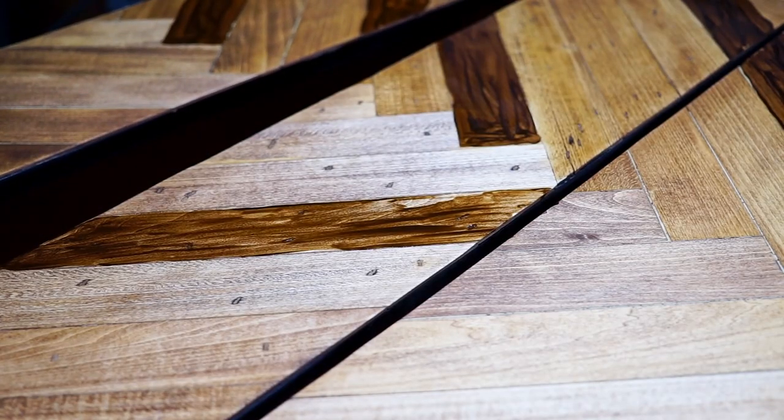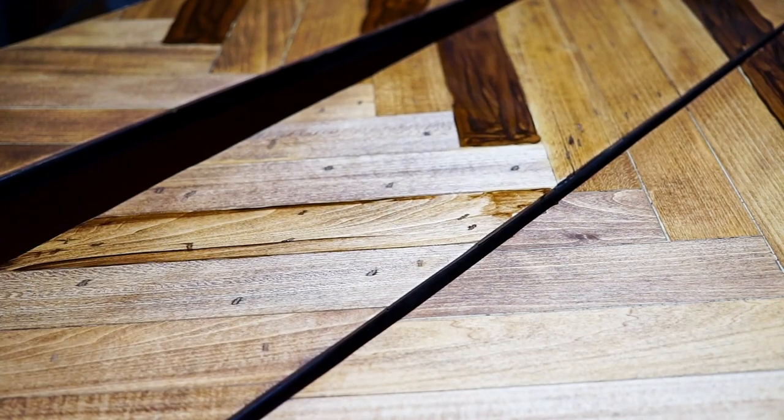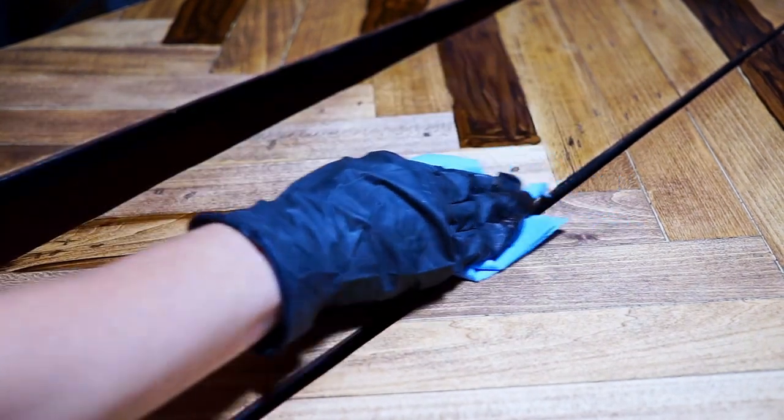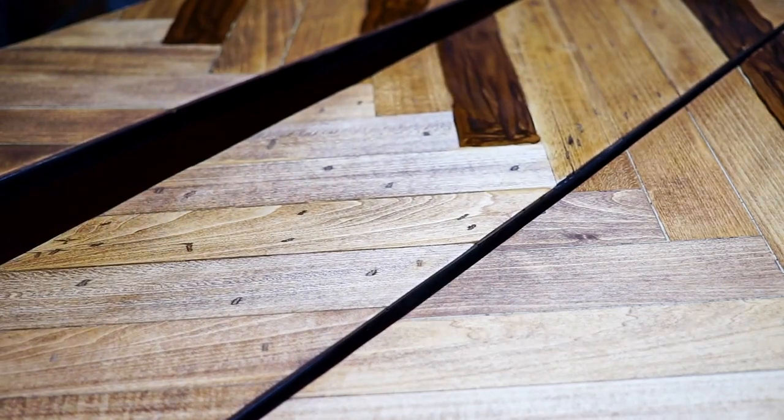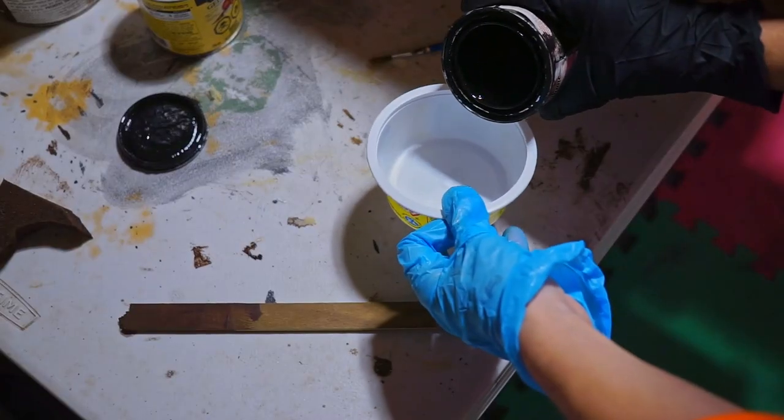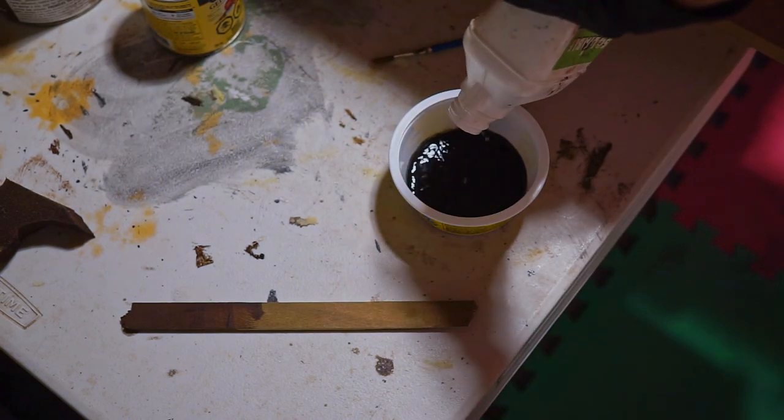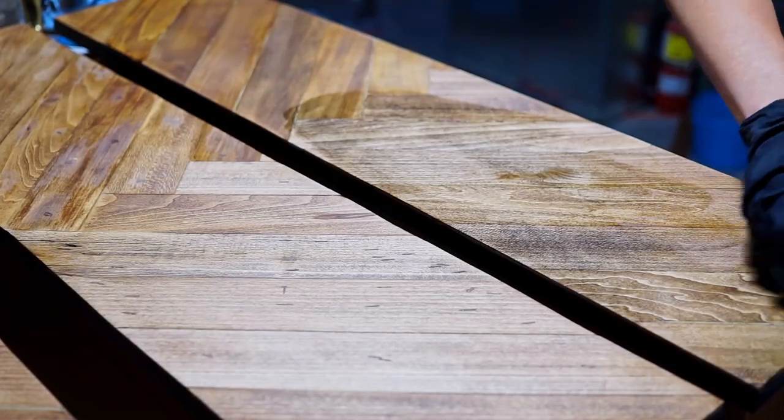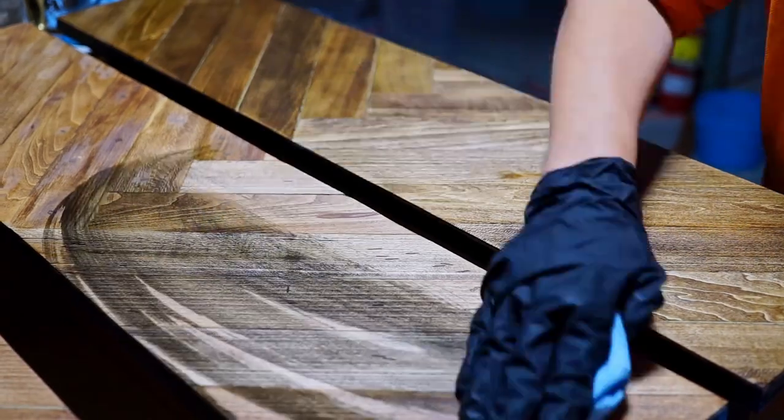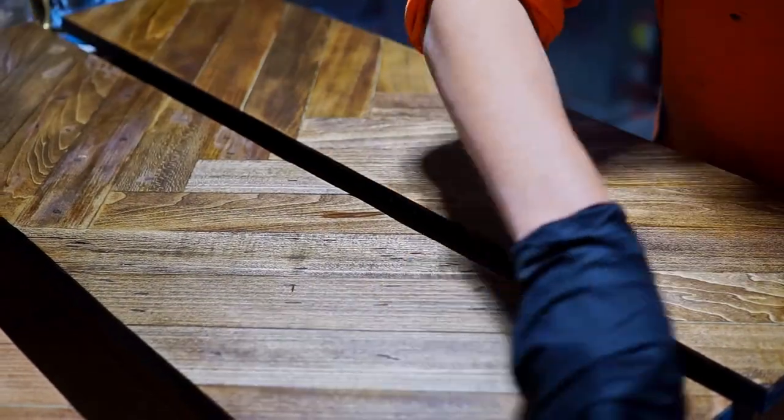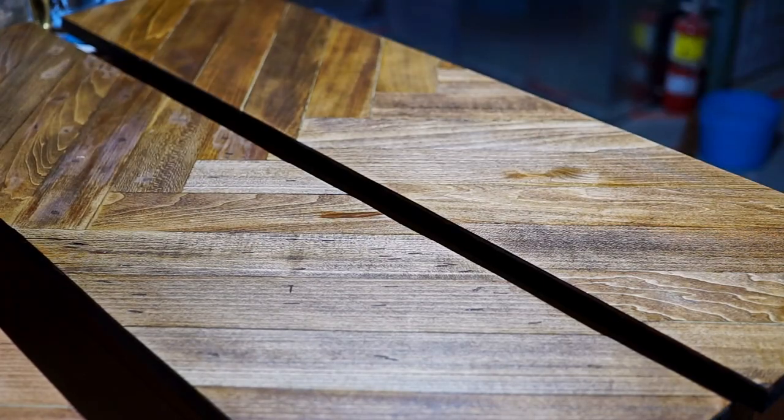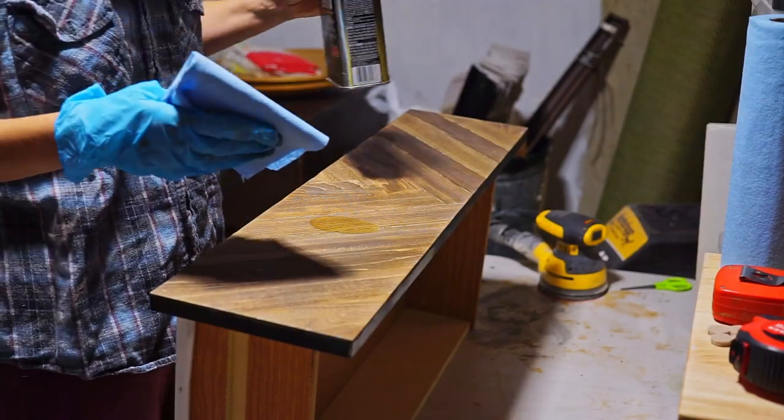If you guys enjoyed this video so far, that would mean the world to me if you give it a thumbs up and subscribe to my channel. That would mean a lot really. When the stain dried out, I wasn't really happy with the color. It looked kind of brownish to me. So I mixed black ebony stain with mineral spirit and stained over the brown stain, and I love how it turned out. It was the color I was looking for. I let the stain dry for eight hours and then I added three layers of clear satin wipe-on poly.